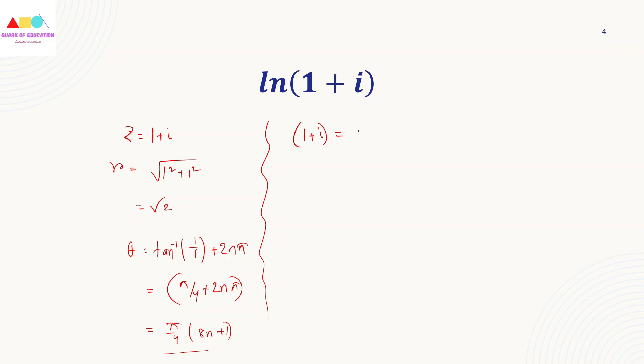When we write the argument for 1 plus i, we write it in the form r e to the power i theta. So our r value is root 2, and theta is pi by 4. So ln(1+i) equals ln root 2 plus ln e to the power i pi by 4.